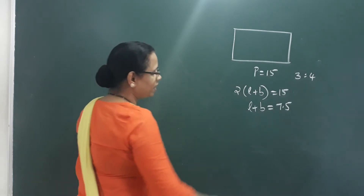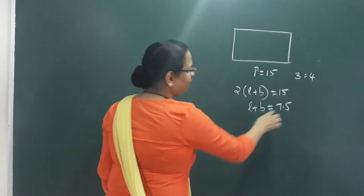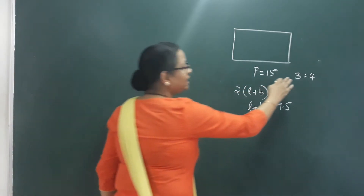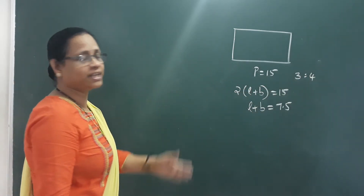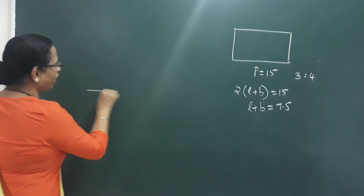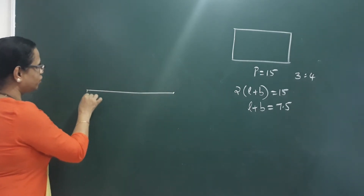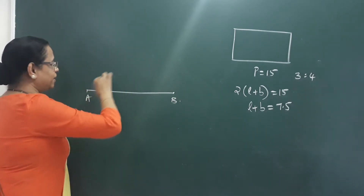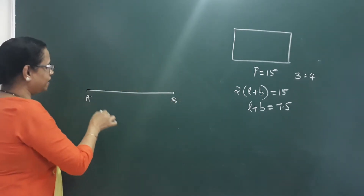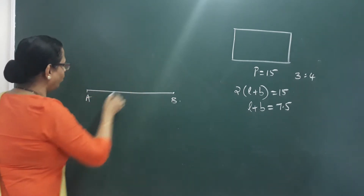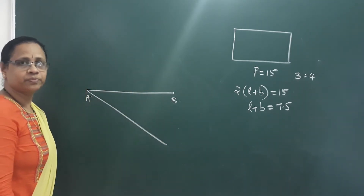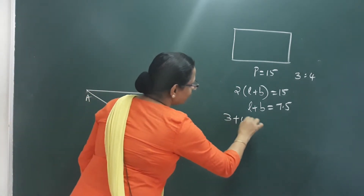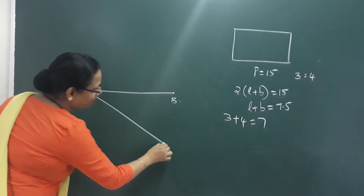So length plus breadth is 7.5. We have two parts in the ratio 3 is to 4. Divide 7.5 into these two parts. Draw a line AB of 7.5. This is a line. We take 3 plus 4 equals 7 equal parts.